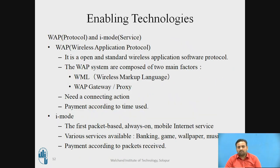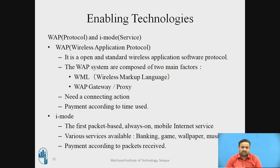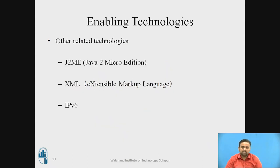WAP protocol and iMode service are also key enablers. WAP is an open standard Wireless Application Protocol using WML, with a WAP gateway or proxy handling action and payment according to time used. iMode is the first packet-based service — always-on mobile internet — offering banking, games, and payment according to packets used. The underlying technologies used are J2EE, J2ME, XML, and IPv6.